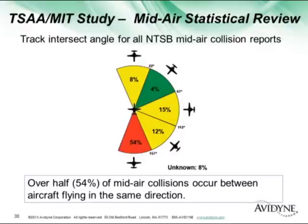Another interesting fact: over half of the mid-airs occurred between aircraft flying the same direction. If you see an aircraft out at 45 degrees off the nose, there's a pretty good chance you're going to see them visually — you're getting the left-to-right or right-to-left motion. If they're coming head-on, it's harder for the eye to pick that up. But a majority of these accidents are in overtake situations, which is really interesting.